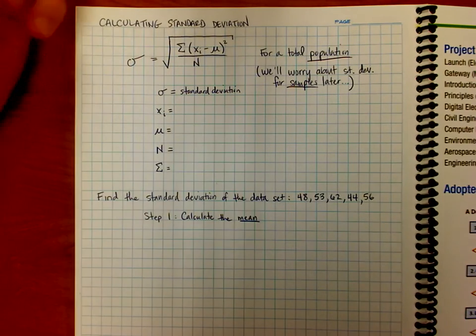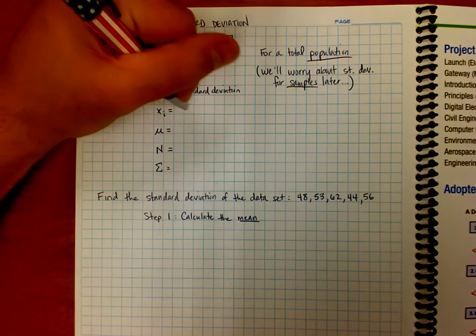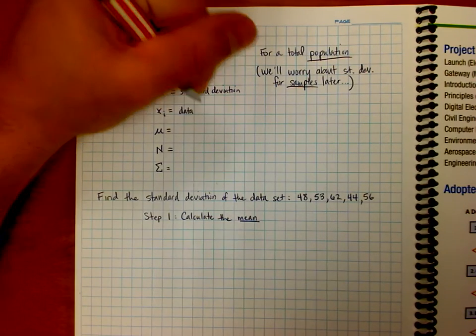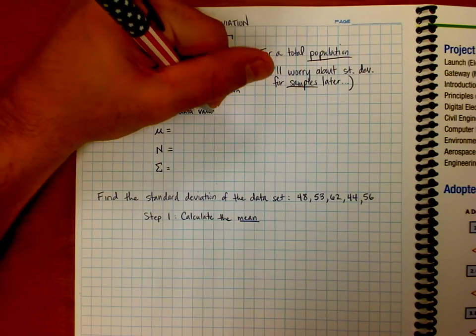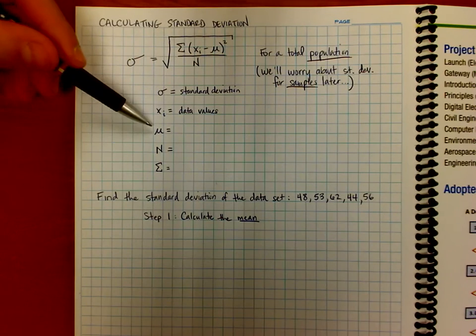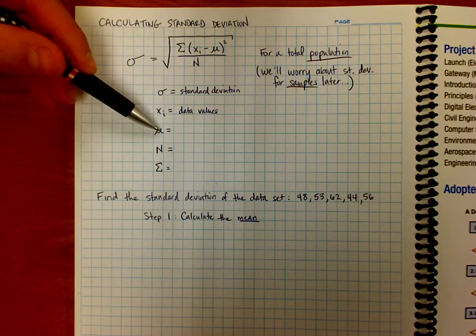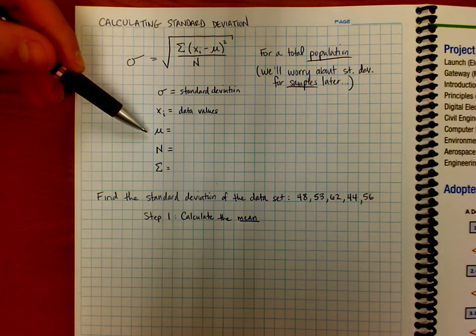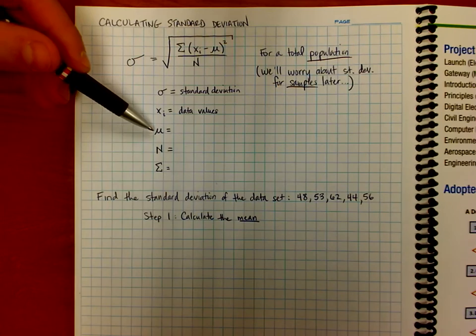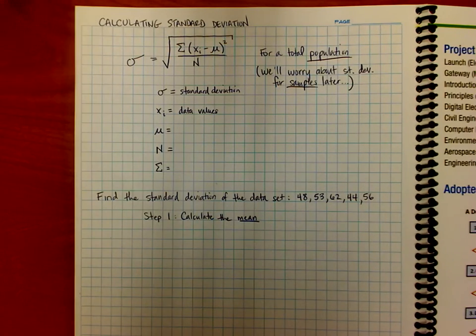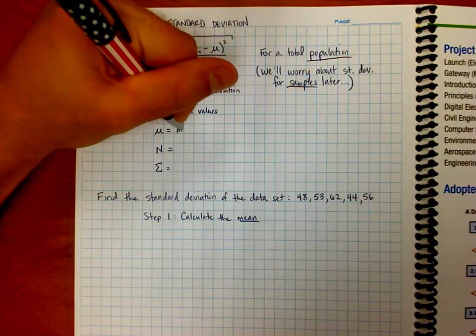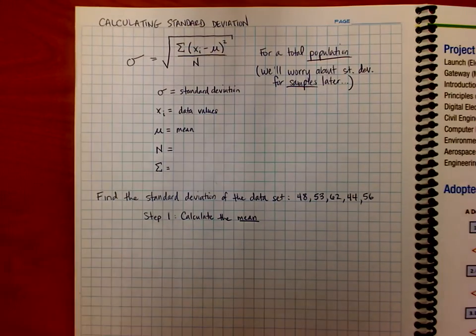X sub i means that's your individual data points. This little symbol here is the Greek letter mu. It looks like a U, but it's got this funny little tail in front, or it kind of looks like a little curvy looking capitalized M, right? Whichever way you want to look at it. Typically with the tail on the front, but that stands for the mean. Which you know how to calculate the mean. That's like the average, right?